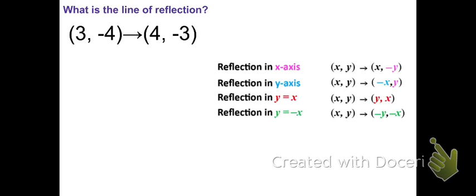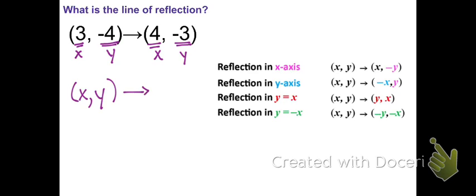In this example, the 3 that was in the x-spot is now in the y-spot, and it was positive but is now negative. Similarly, the y-coordinate moved to the x-coordinate spot, and it was negative but is now positive. So the coordinates switched spots and also became the opposite sign — this is a reflection over the line y equals negative x.